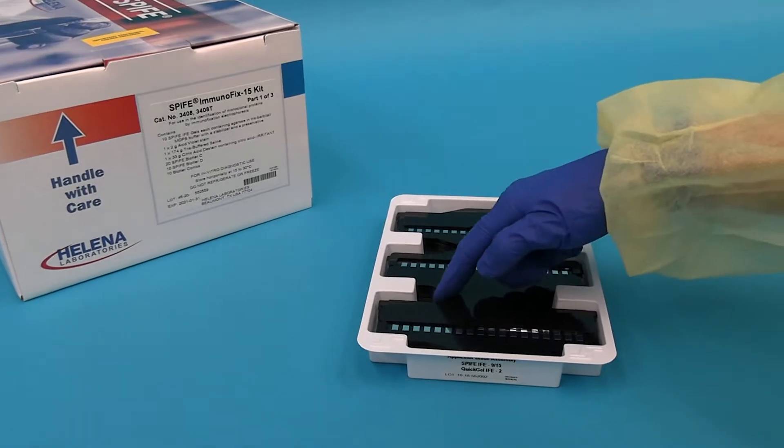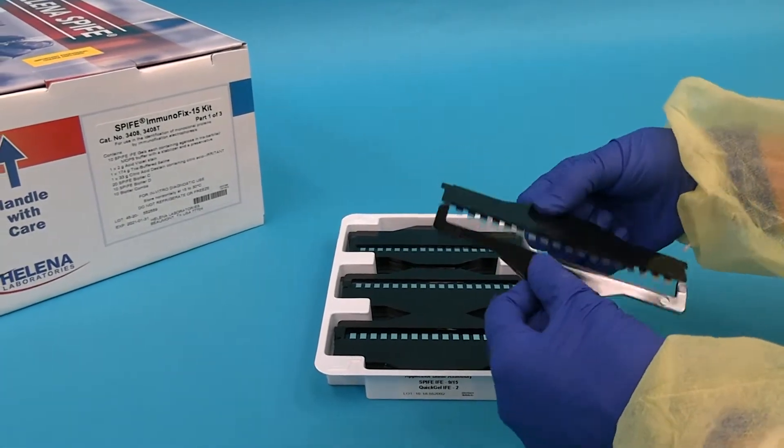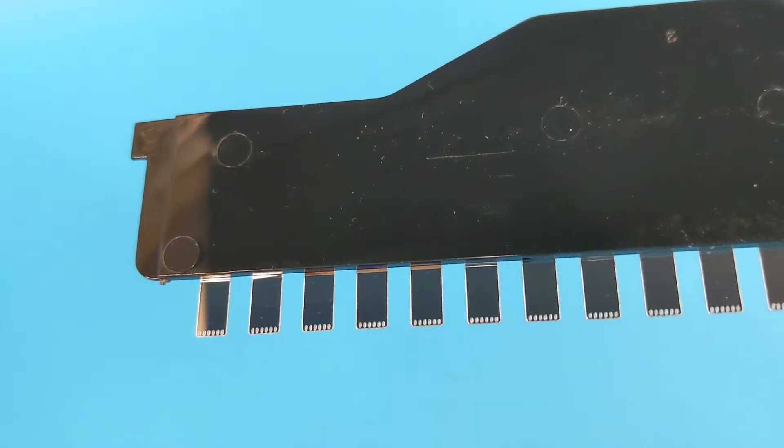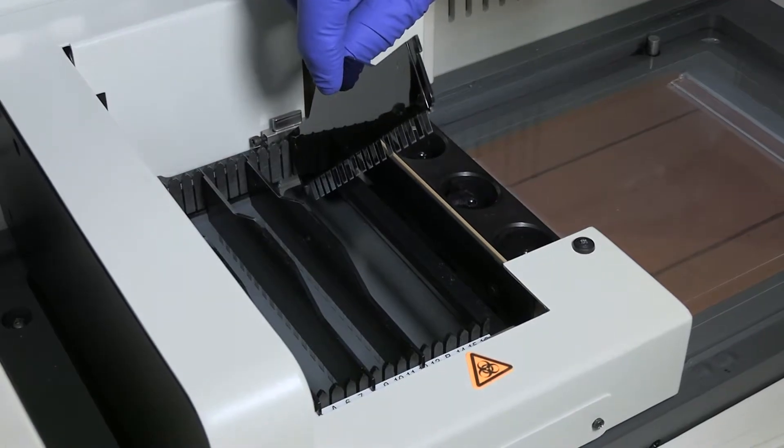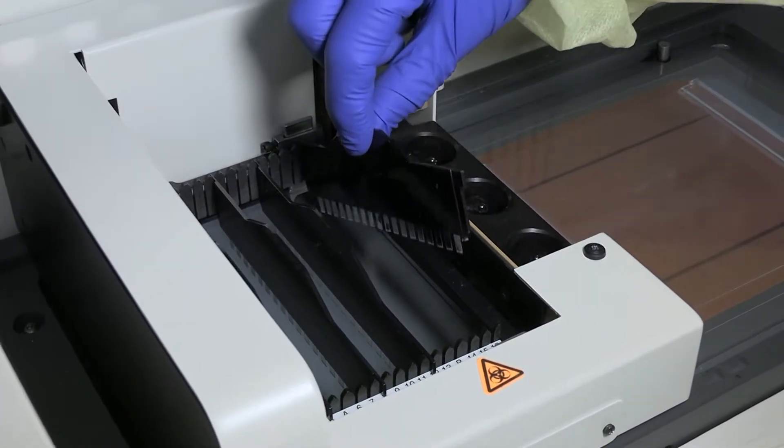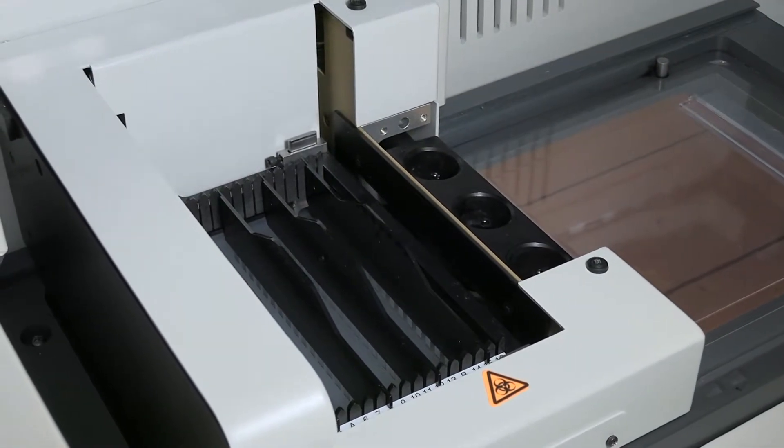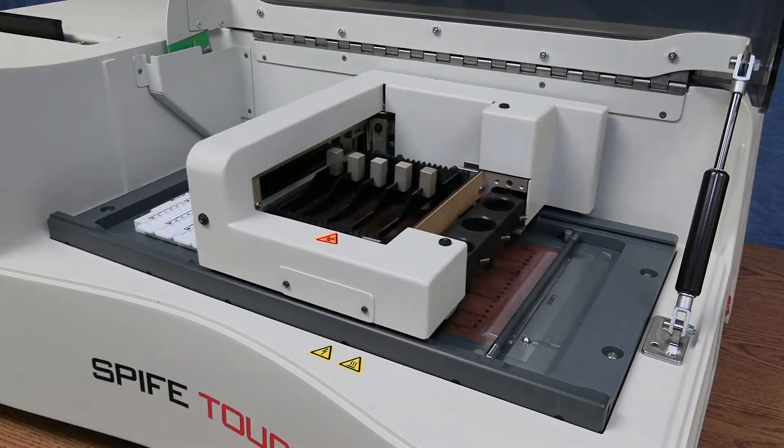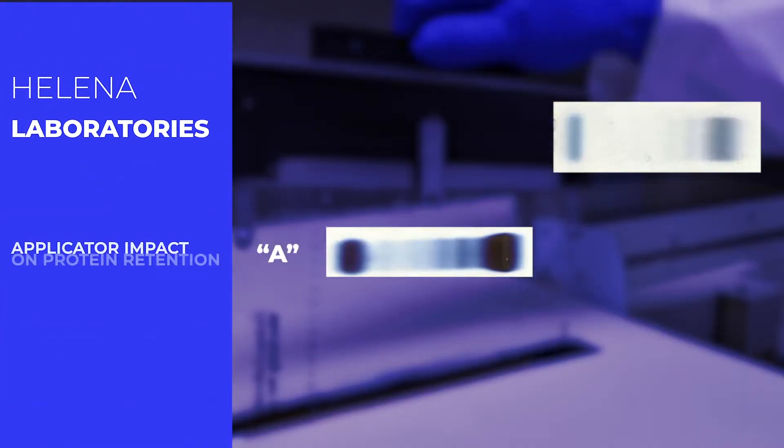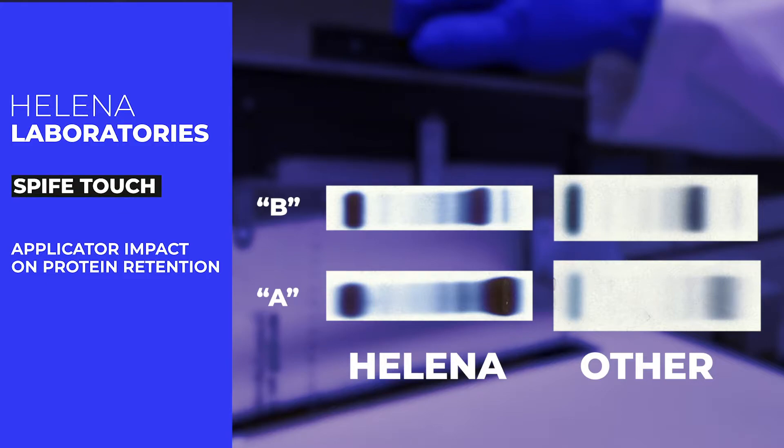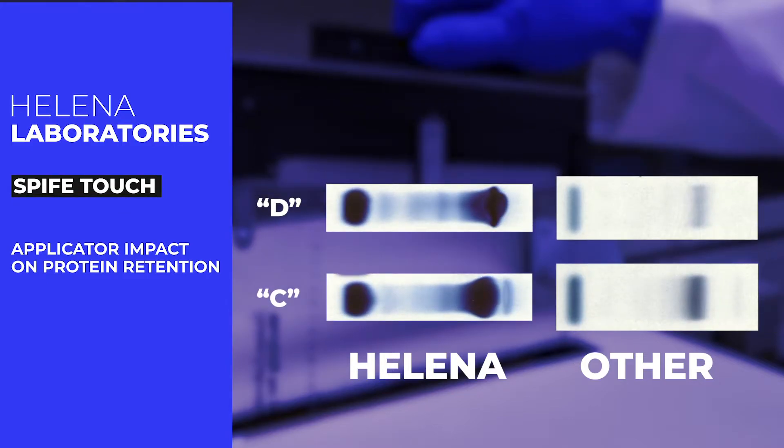The applicator blade for the Spiffy Touch is very unique. It delivers a direct application of the specimen to the gel without protein retention. Other semi-automated gel systems use paper applicators that can hold back macromolecules and other large proteins. These proteins will be retained in the paper applicator and will not apply to the gel. While the frequency of this is less than 2 in 100, this could lead to missing IgM or polymerized IgA bands.